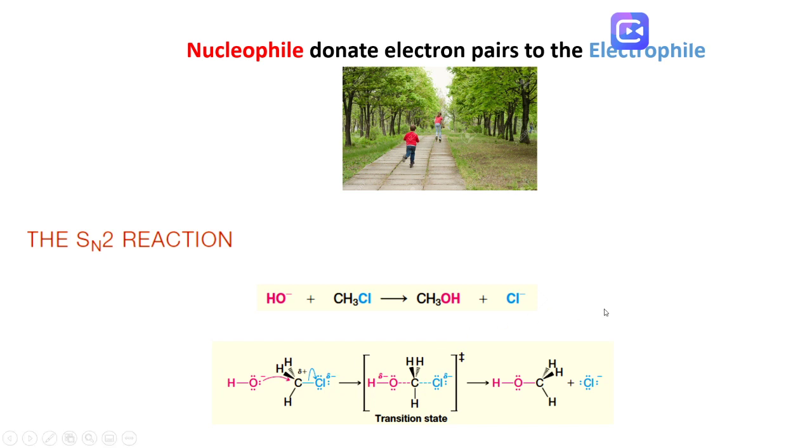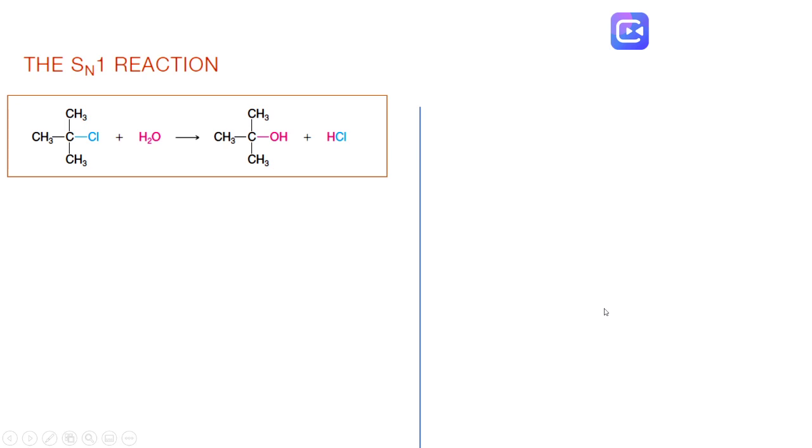The other example is the SN1 reaction. Here we have water as the nucleophile and tertiary butyl chloride as the electrophile. The products are the alcohol and hydrogen chloride.